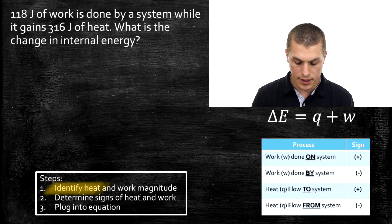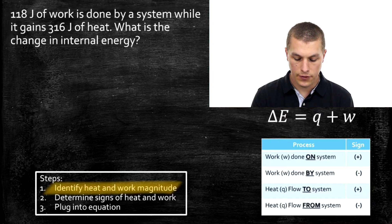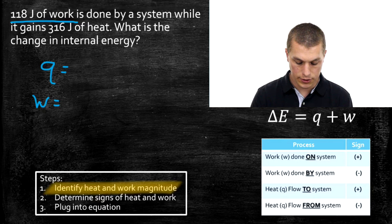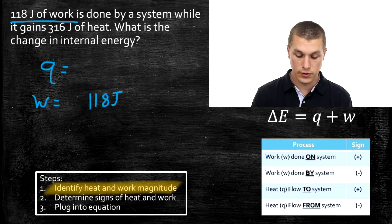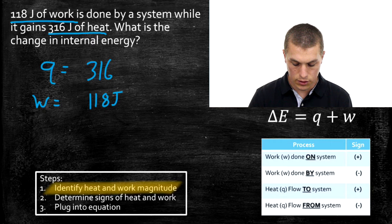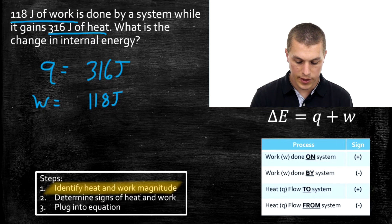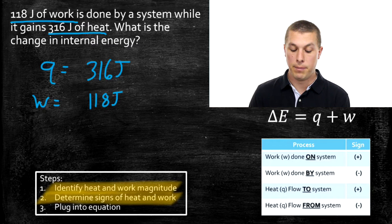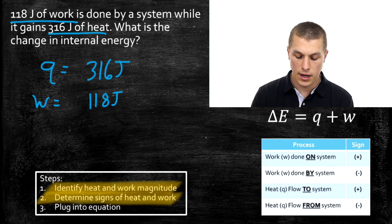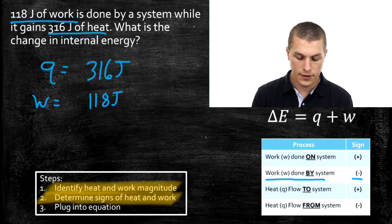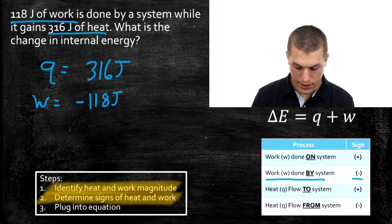Again, we follow our steps. First, identify the magnitude of heat and work. Our problem says 118 joules of work, so we write 118 joules and leave a space for the sign. It also tells us 316 joules of heat, so we write 316 joules. Step two — the hardest step — determine the signs. It says 118 joules of work is done by the system. Since it's done by the system, our table tells us that work done by a system is negative, so we write a negative sign.